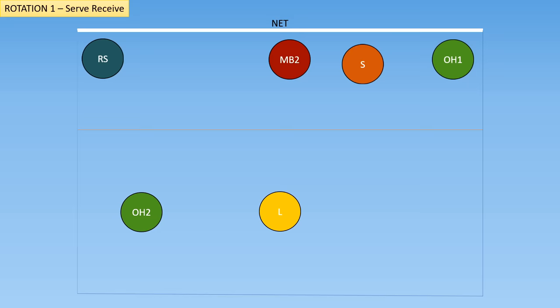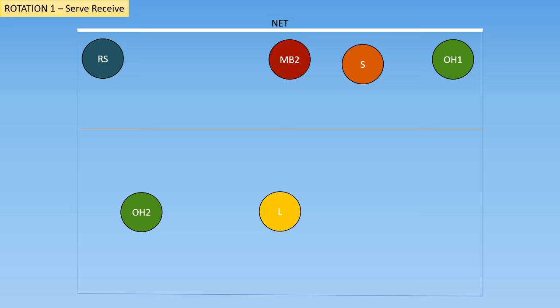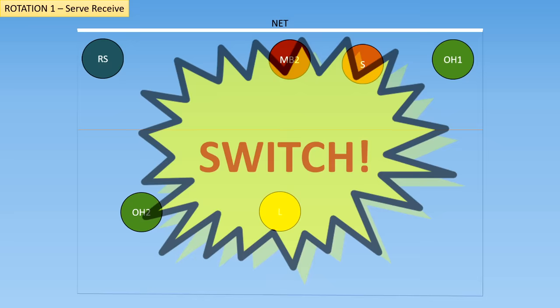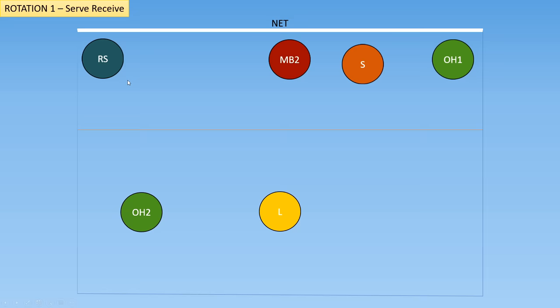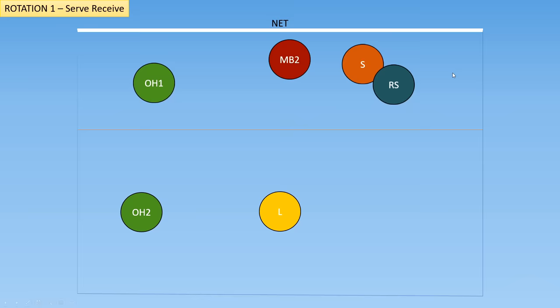Now the ball has crossed to the other side of the net. We need to get into base positions. A lot of times you'll hear teams say 'switch,' which reminds everybody to get into their base positions. The outside hitter needs to get to the front left, the right side hitter needs to get to the front right, and the setter needs to get to the back right. They'll switch and get to their base positions accordingly.